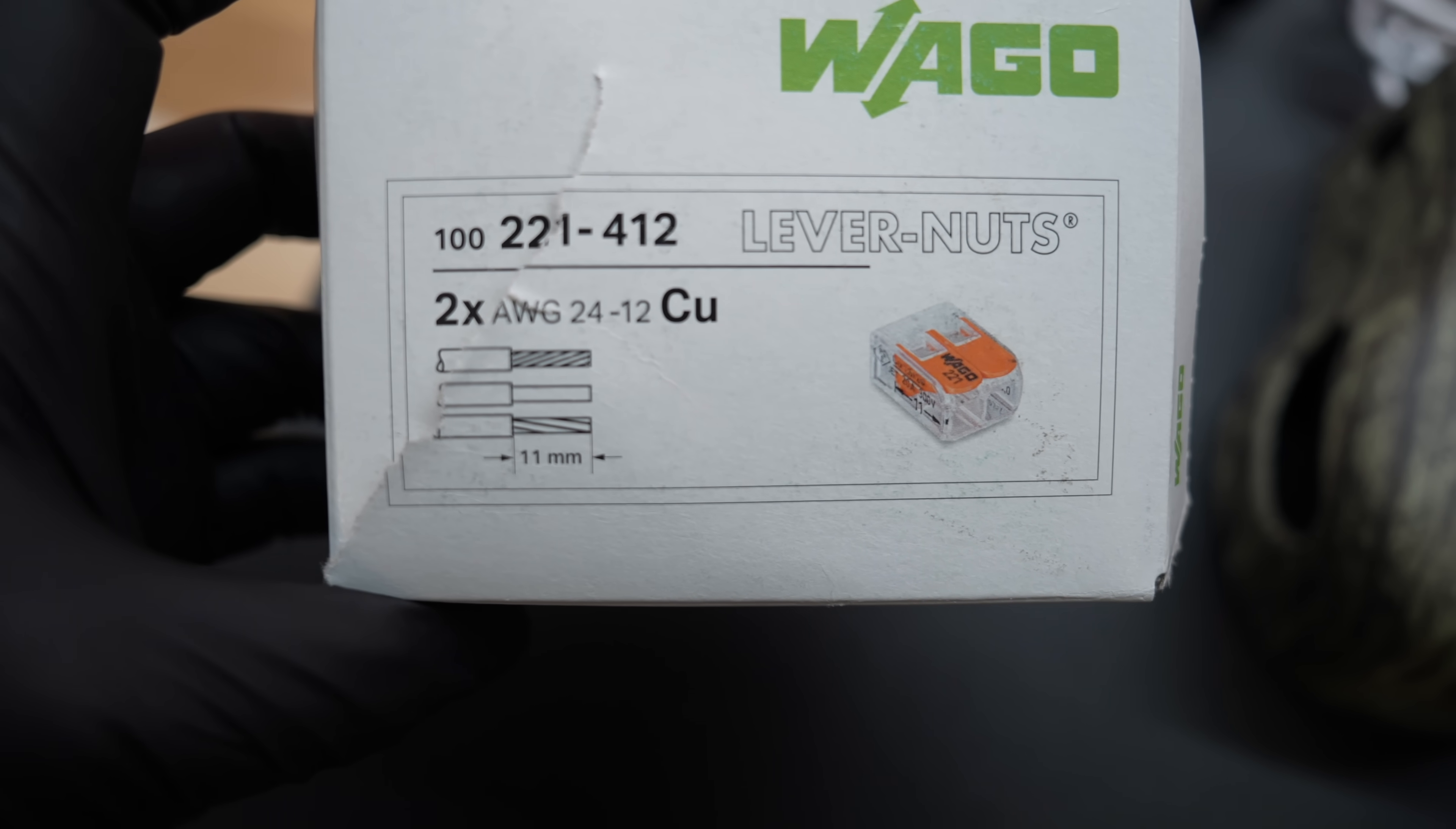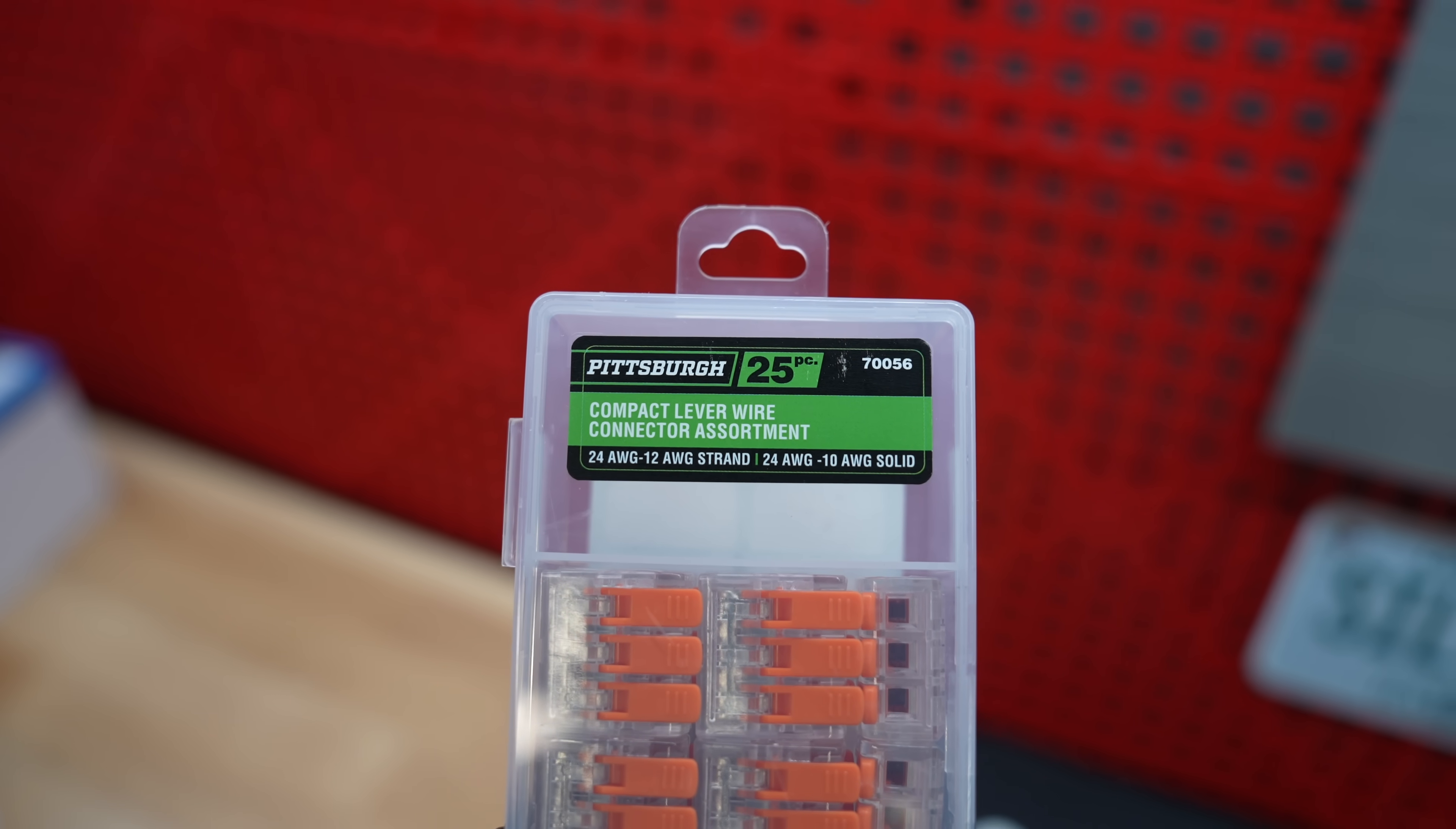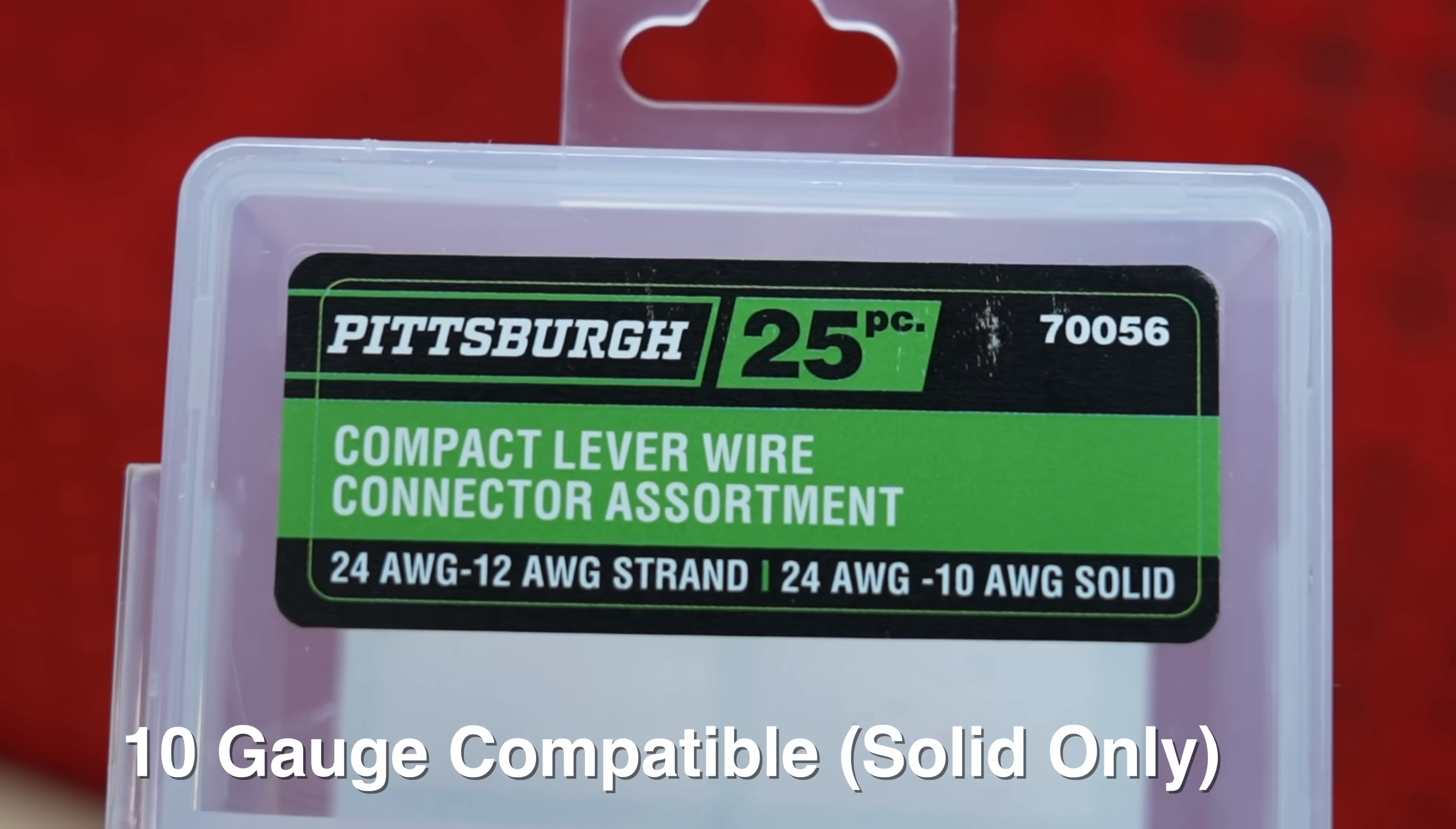Though both say they can work on stranded wire from 12 to 24 gauge, the Pittsburgh has an advantage. It can handle solid wire from 10 to 24 gauge, meaning it can take larger wire than the Wago.